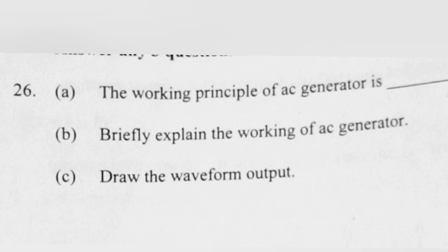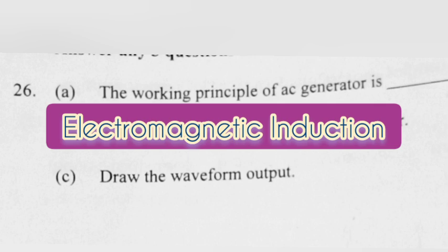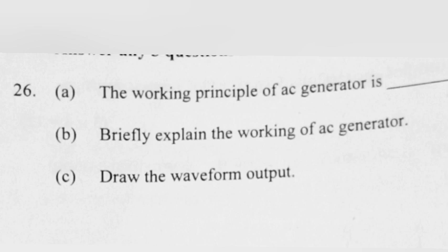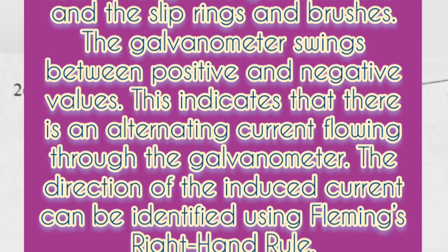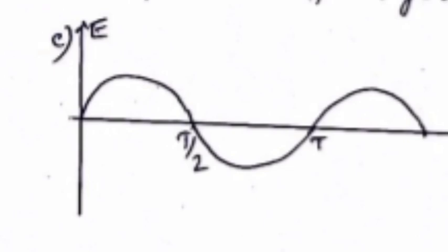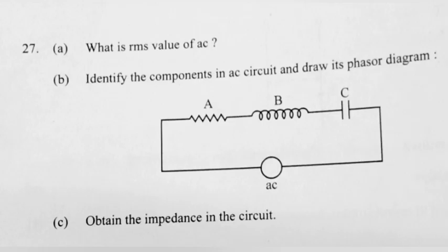The working principle of an AC generator is electromagnetic induction. When the armature rotates between the poles of the magnet on an axis perpendicular to the magnetic field, the flux linkage of the armature changes continuously. As a result, an electric current flows through the galvanometer via slip rings and brushes, swinging between positive and negative values — indicating alternating current. The direction of induced current is identified using Fleming's right-hand rule.